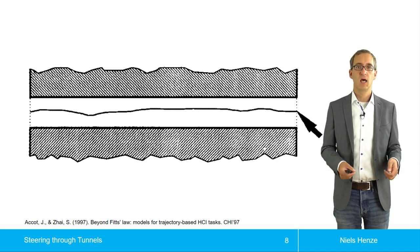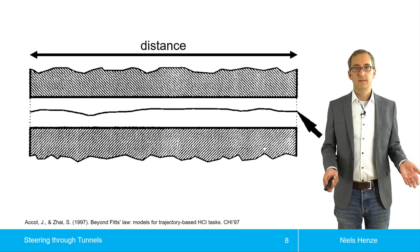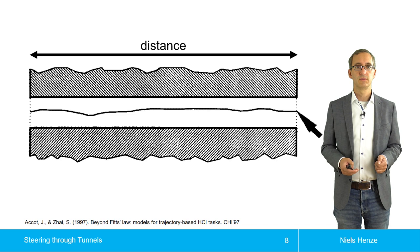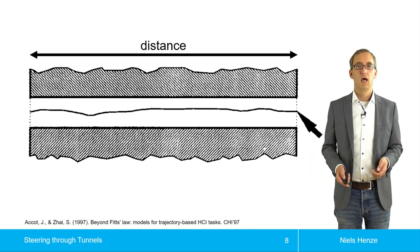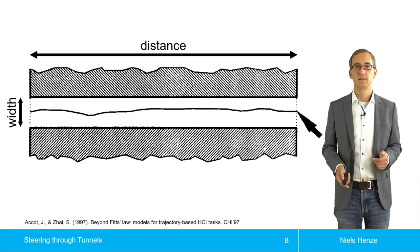And then it looks like this. Here we also have the trace and the pointer moves through this tunnel. We have a distance, just as for Fitts' law. How far has the mouse to travel to leave the tunnel again? And we also have some kind of size. That's how wide the tunnel is.